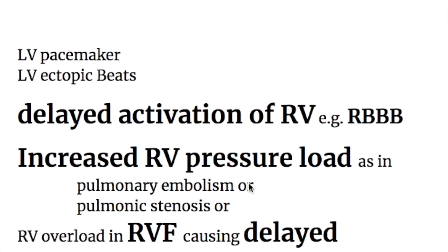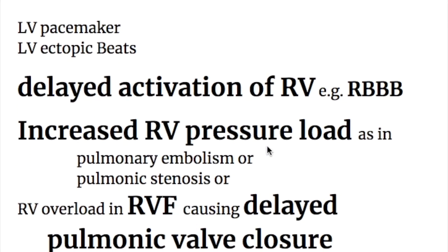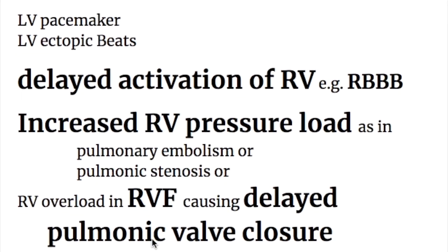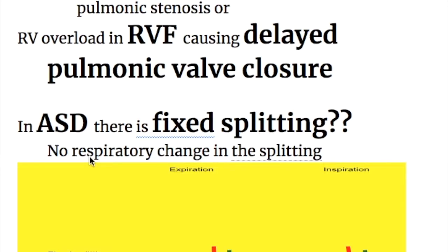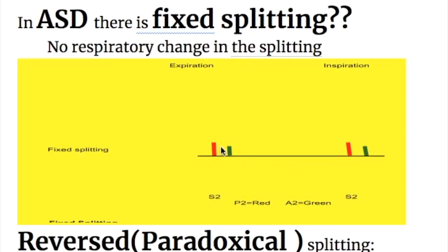Left ventricular causes of S2 split include LV pacemaker and LV ectopic beats. Right ventricular causes include: delayed activation of the right ventricle, as in right bundle branch block; and increased right ventricular pressure load, occurring in pulmonary embolism, pulmonic stenosis, or RV overload causing right ventricular failure and delayed pulmonary valve closure. In ASD there is fixed splitting — no respiratory change — with a fixed distance between aortic and pulmonary valve closures.